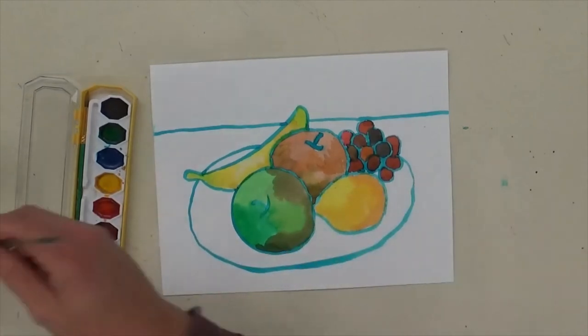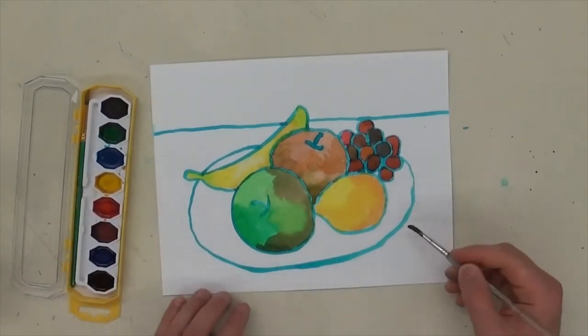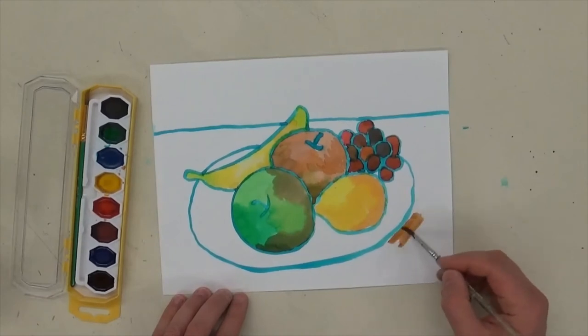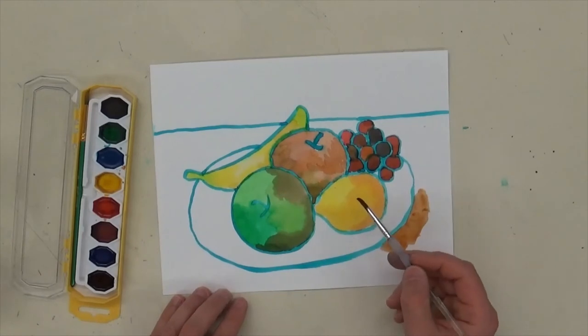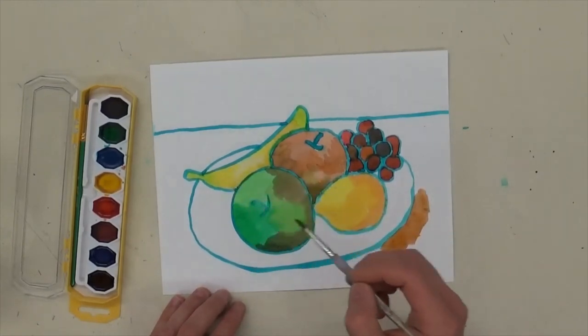So now I'm going to start working on the table. And for that we can just do any dark color. And you want to remember if you're painting a shape, wait for it to dry before you paint the shape that's next to it. So what I did was I kind of jumped around.